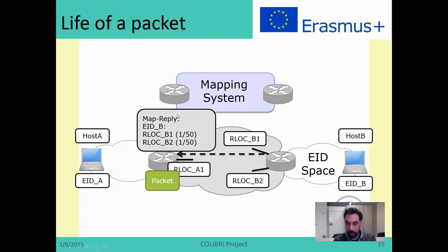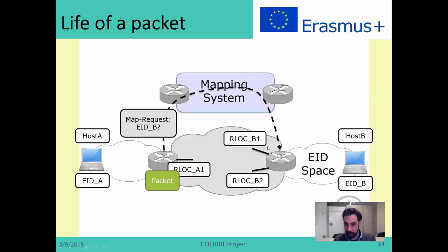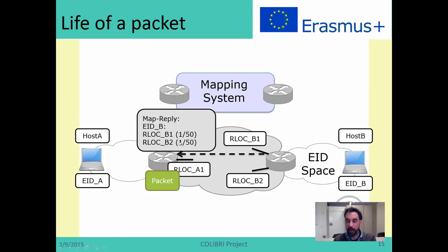The message will be forwarded through the mapping system until it reaches the tunnel router, which will reply with two locators: if you want to reach EAD B, you can send packets to either locator B1 or locator B2. On top of that, it will state the traffic engineering policies — in this case, both locators have the same priority and 50% of traffic goes on each link. As you can imagine, you can have different priorities, many links, or different weights for each link, so you can implement load balancing, active-backup policies, or whatever you want.